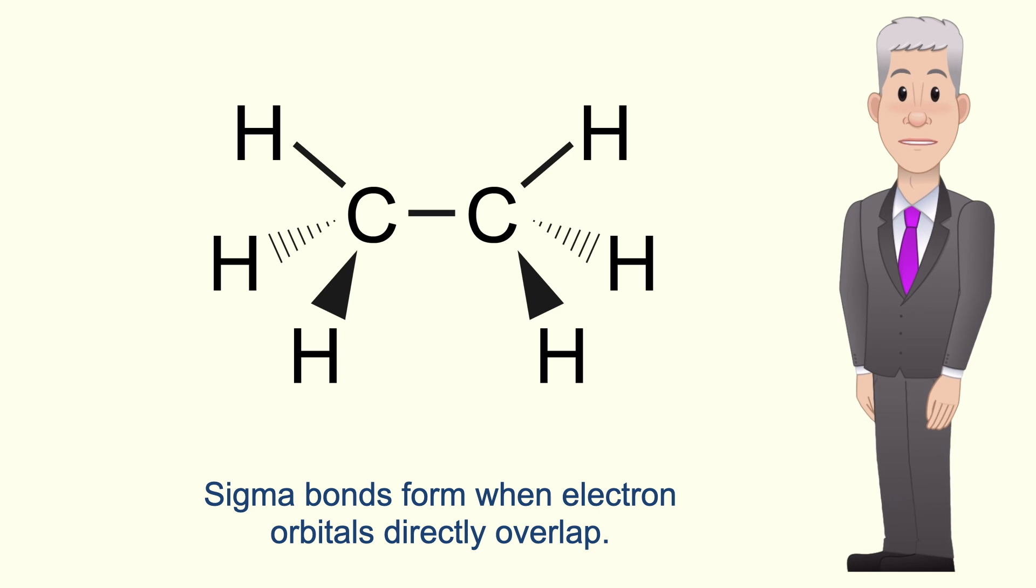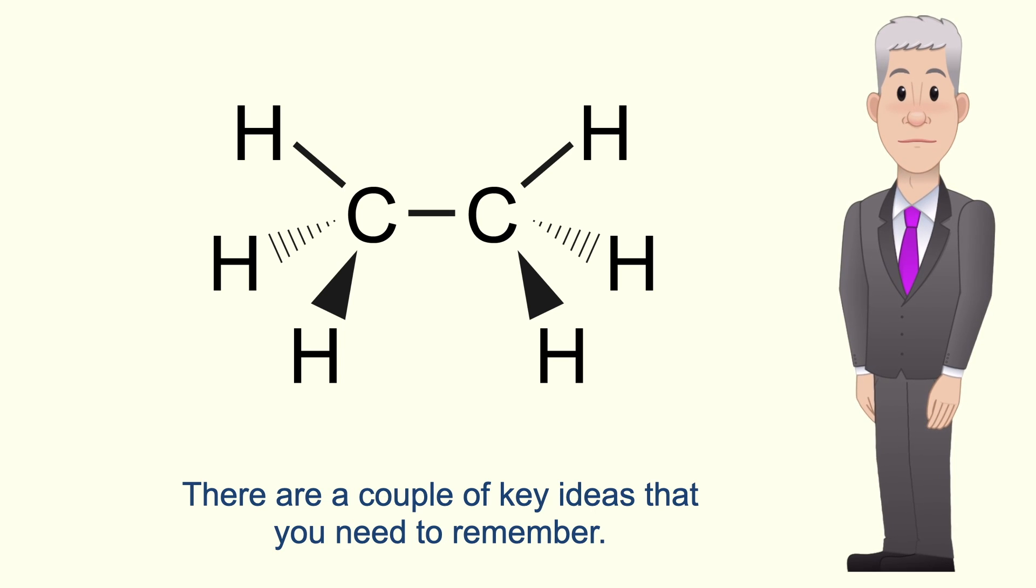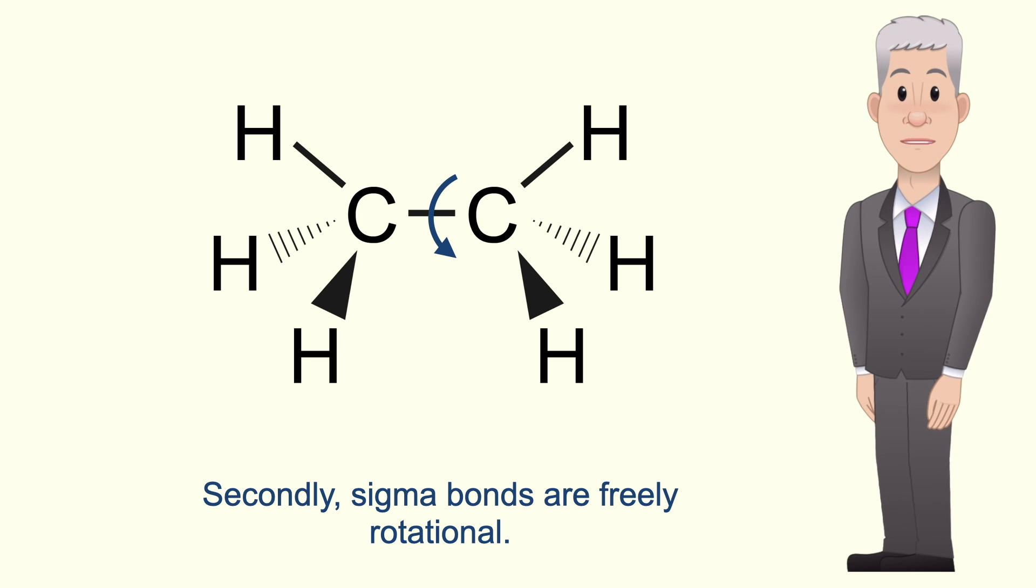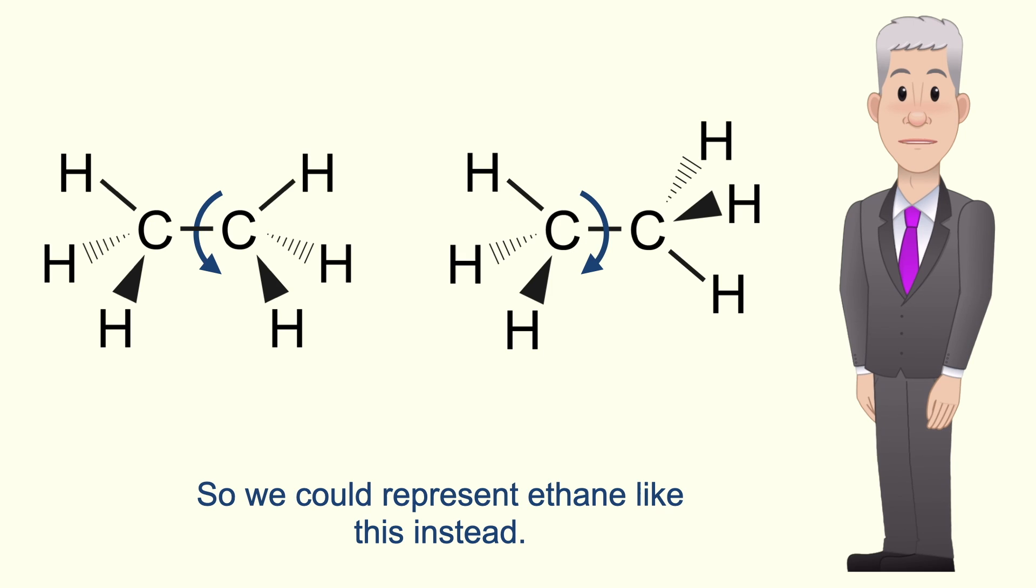Sigma bonds form when electron orbitals directly overlap. Now there are a couple of key ideas you need to remember. Firstly in alkanes the bond angles are tetrahedral, in other words 109.5 degrees. Secondly sigma bonds are freely rotational so we could represent ethane like this instead.